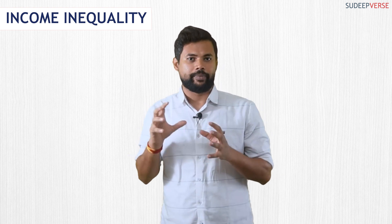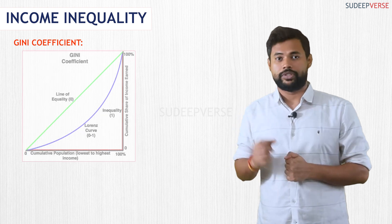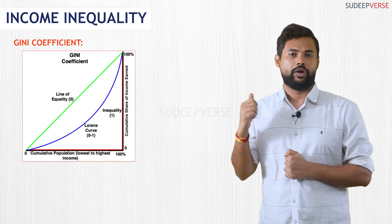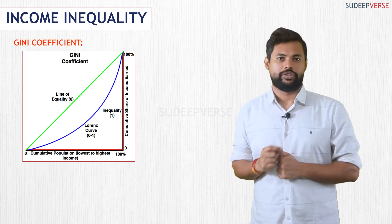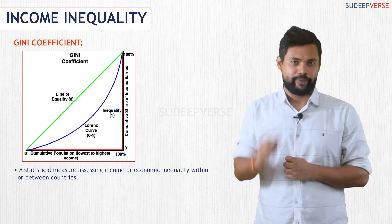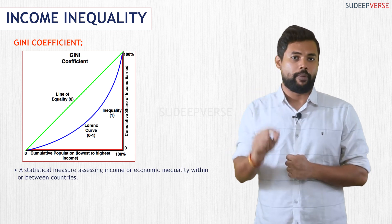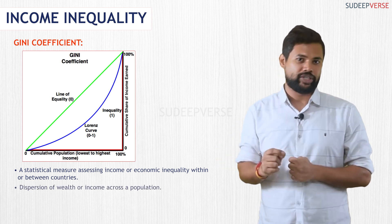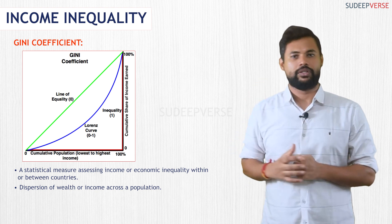The single most important statistical measure for income inequality is the Gini coefficient. If you observe the Gini coefficient properly, you have along the x-axis the percentage of population and along the y-axis the income. The Gini coefficient is a statistical measure that measures income or economic inequality among a population within a country or between different countries. It basically measures the dispersion of wealth or income across the population.